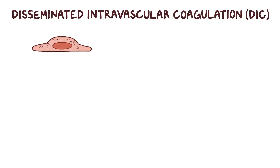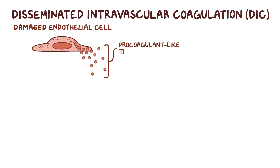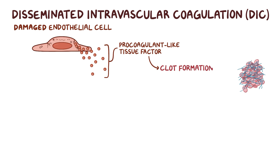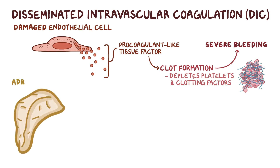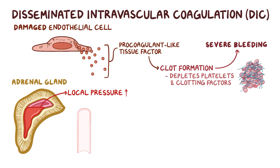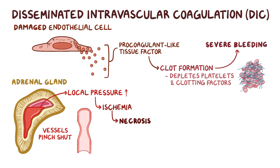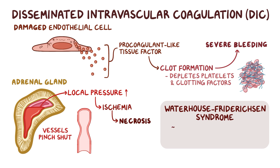Finally, meningococcal sepsis can lead to disseminated intravascular coagulation, or DIC. That's because the damaged endothelial cells release procoagulant-like tissue factor, which makes clots form inside the blood vessels, and that depletes platelets and clotting factors. Unfortunately, this leads to severe bleeding throughout the body. If a lot of blood pools within the adrenal gland, local pressure increases, which makes the adrenal blood vessels pinch shut. This results in ischemia, and eventually necrosis, of the various hormone-producing cells in the adrenal gland, a condition known as Waterhouse-Friderichsen syndrome. Insufficient production of adrenal hormones, especially aldosterone and cortisol, can further worsen the shock.